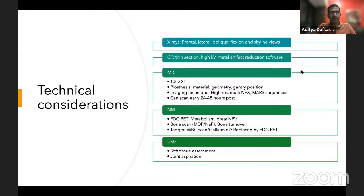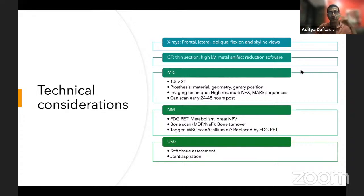The artifact increases based on the kind of metal. Cobalt chrome will have enormous artifact, but something like zirconium or oxidium will have much less. The geometry of the component also makes a difference — a linear rod tends not to produce as much artifact, but a rounded structure tends to produce more. So the femoral head can produce a lot of artifact, but the femoral stem will produce less.